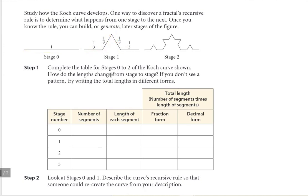The way that we did that is we took this one segment and then split it into thirds, and then created an equilateral triangle in that center piece. Equilateral means that all three sides of that triangle would be the same. And then we basically just erase out that center piece. And that's how we go from stage zero to stage one.